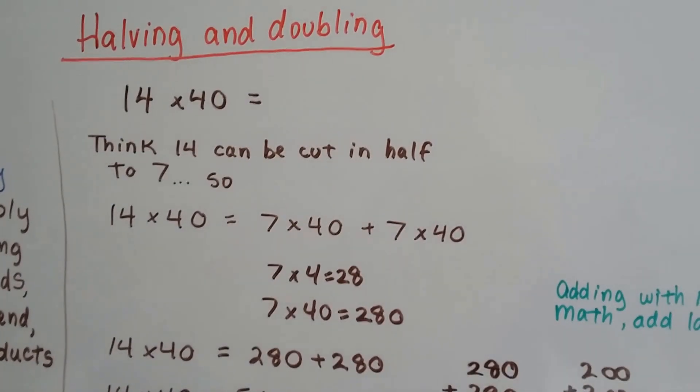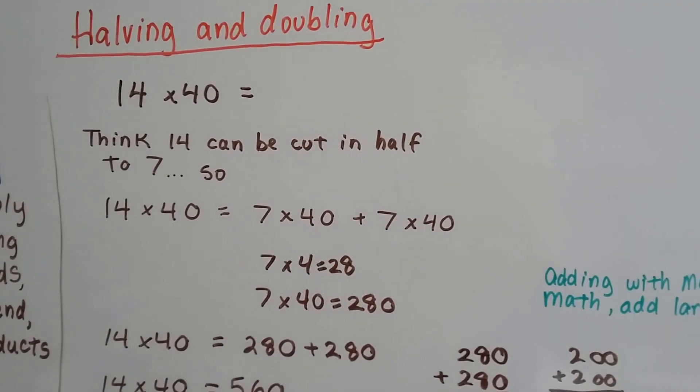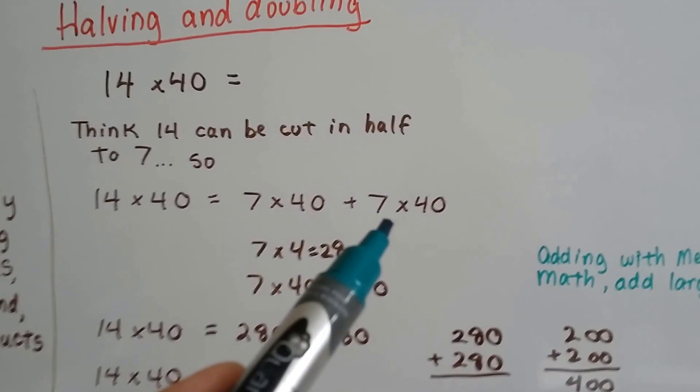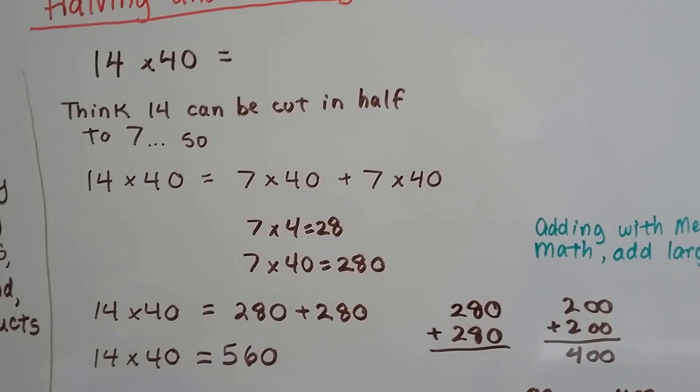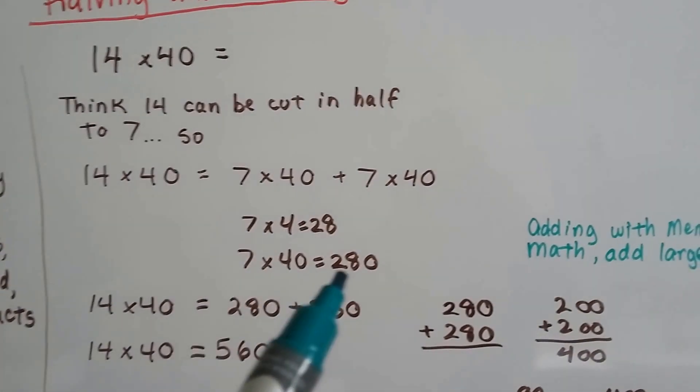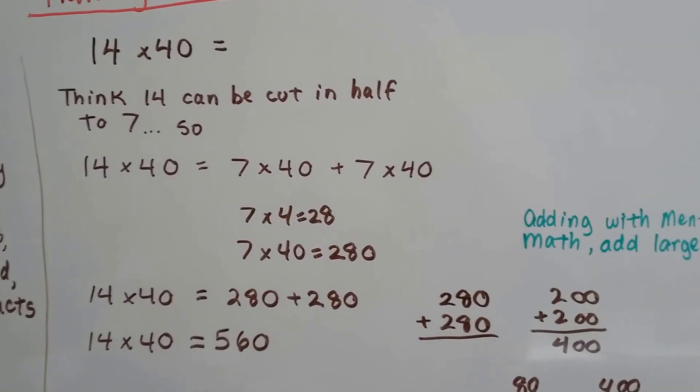We can also do what's called halving and doubling. If you have 14 times 40, think of 14 cut in half to 7. We have a 7 and a 7. So we can do 7 times 40 plus 7 times 40. 7 times 4 is 28, so 7 times 40 has a zero added on the end. That's 280.